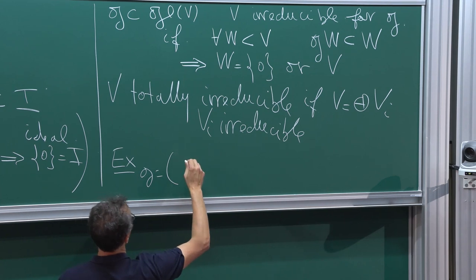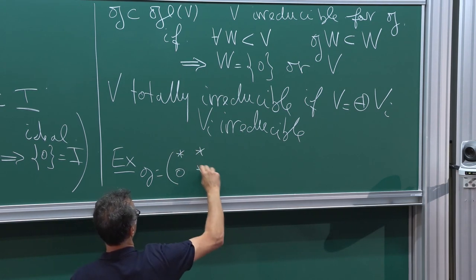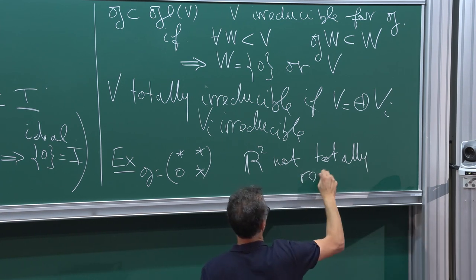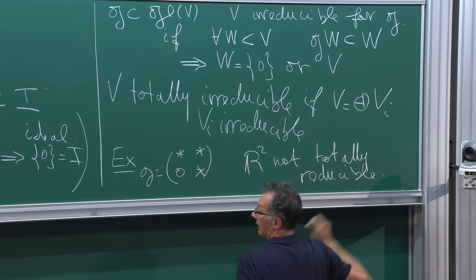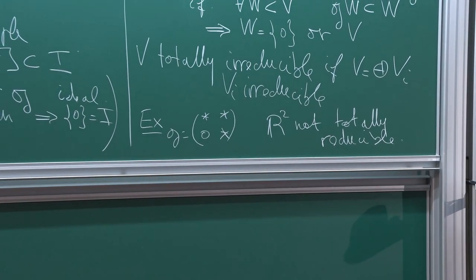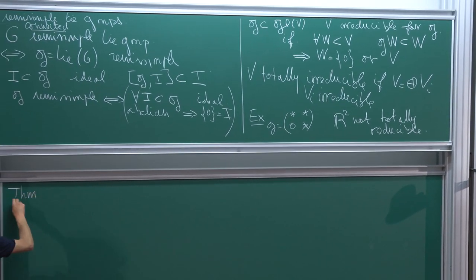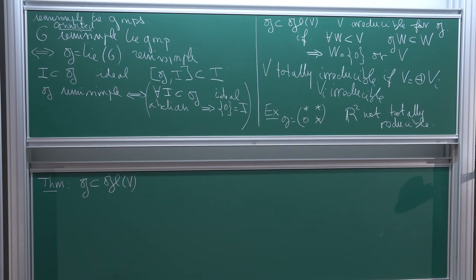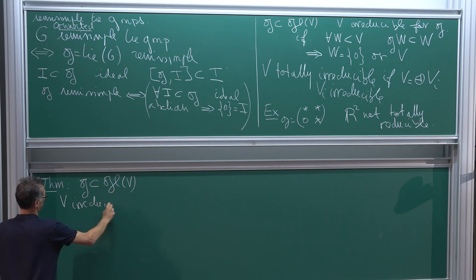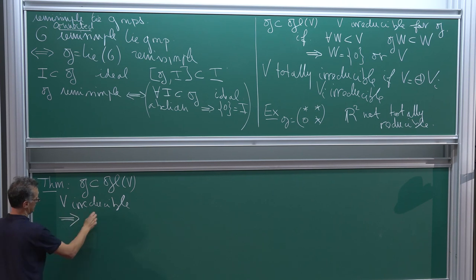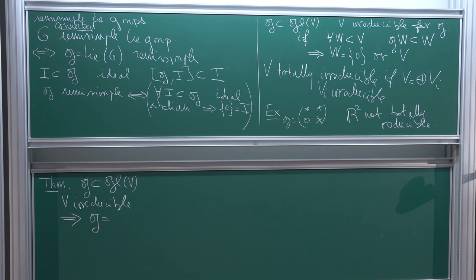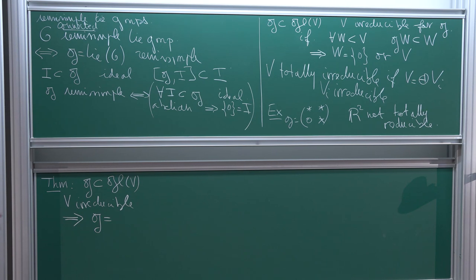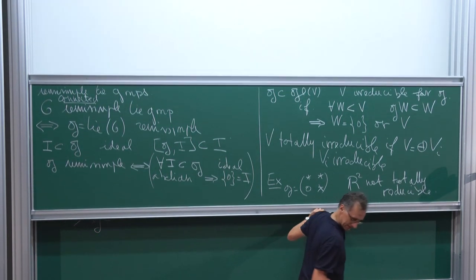It's not always true that an action is totally reducible — for example if you look at G being the set of matrices of upper-triangular form, then R² is not totally reducible. Then here comes the theorem: if you take G inside GL(V), an algebra or Lie algebra of matrices, and you assume that V is irreducible, this implies that you may decompose G in a unique way.